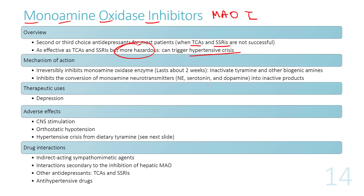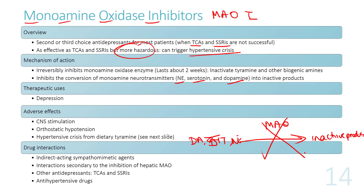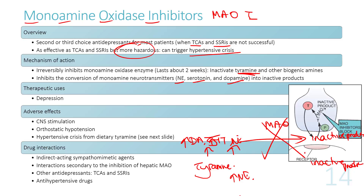MAOIs work by inhibiting monoamine oxidase, the enzyme that converts dopamine, 5-HT, and norepinephrine into inactive products. Inhibiting this enzyme raises levels of all three monoamines and causes CNS excitation. However, monoamine oxidase also inactivates tyramine found in certain foods, and if tyramine is not inactivated, it causes an increase in norepinephrine release.